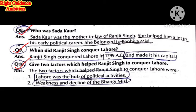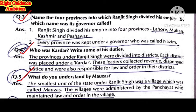The second factor was the weakness and decline of the Bhangi misl — a group that was famous but had become very weak and could not manage the area properly, giving Maharaj Ranjit Singh the chance to capture it. Name the four provinces into which Maharaj Ranjit Singh divided his empire. He divided it into Lahore, Multan, Kashmir, and Peshawar. The head of each province was called a Nazeem.